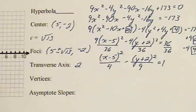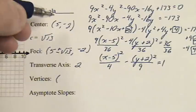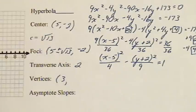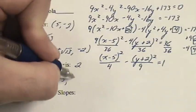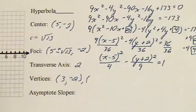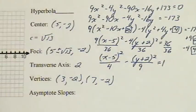We'll use the transverse axis 2 that we just found along with the center to find the vertices. Again, we change the x. 5 minus 2 is 3, comma negative 2. And we do 5 plus 2, which is 7, comma negative 2.